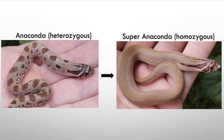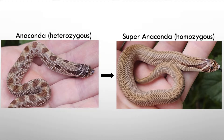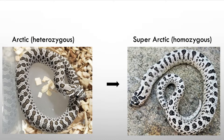Looking at examples: the anaconda gene is a pattern reduction gene. On the left, you see what the animal looks like with one copy of the anaconda — the pattern is reduced. But if the animal has two copies of the anaconda gene, you get what's called the super form — a total pattern reduction.